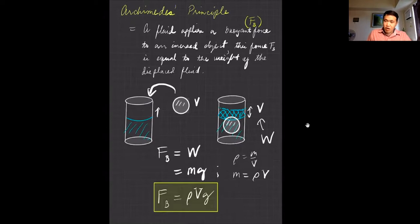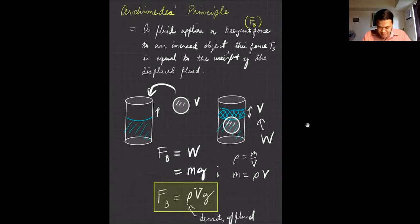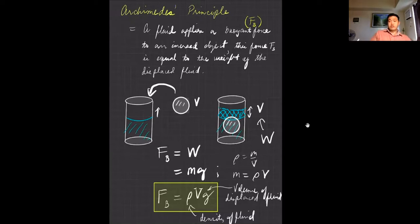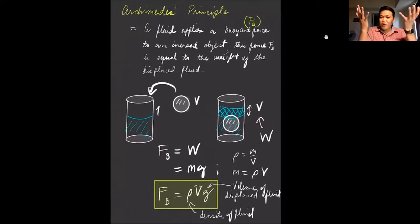The buoyant force depends on the density of the fluid — not the object, but the fluid — where you submerge any object. The capital V here is the volume of the displaced fluid, which is usually water. This is Archimedes' principle. Now, how do you know whether an object will float or will sink?